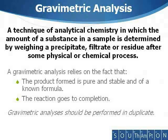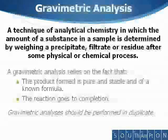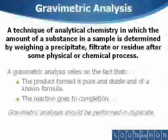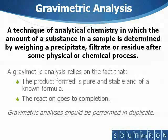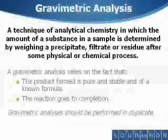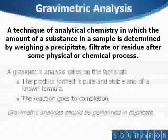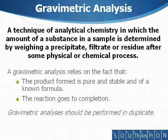Gravimetric analysis is a method based on the isolation of the desired constituent in a pure product from a sample. The product is usually separated by precipitation. From the weights of sample and precipitate, the percentage of the constituent can then be calculated.